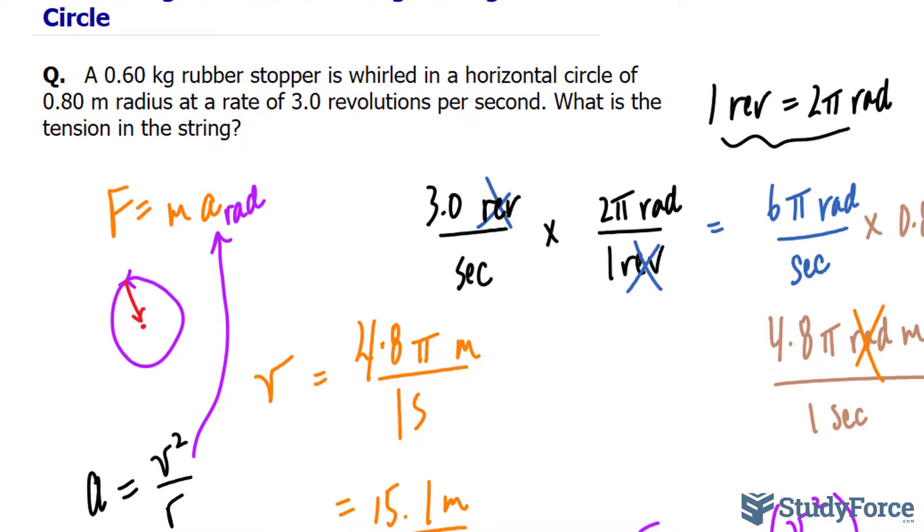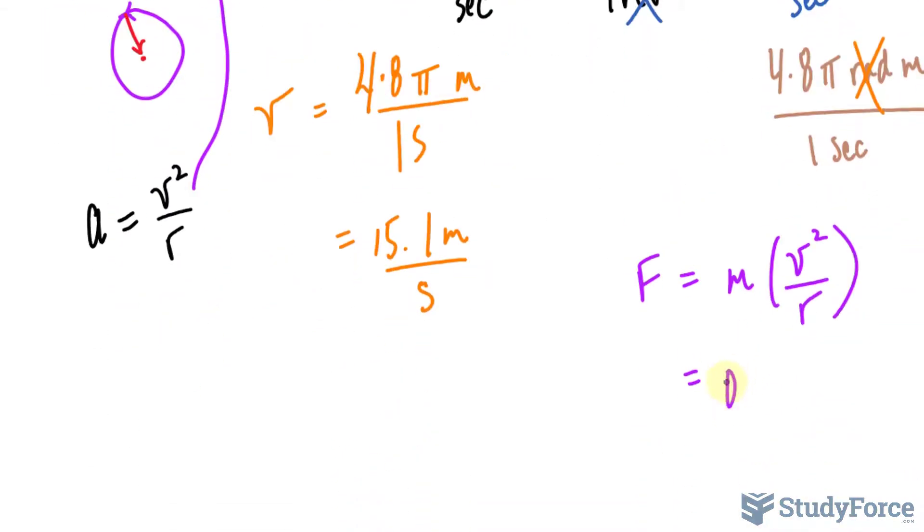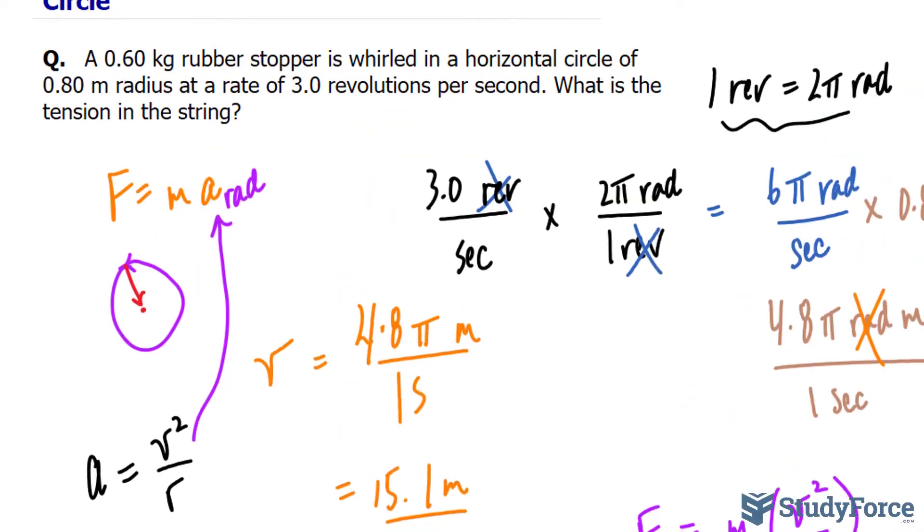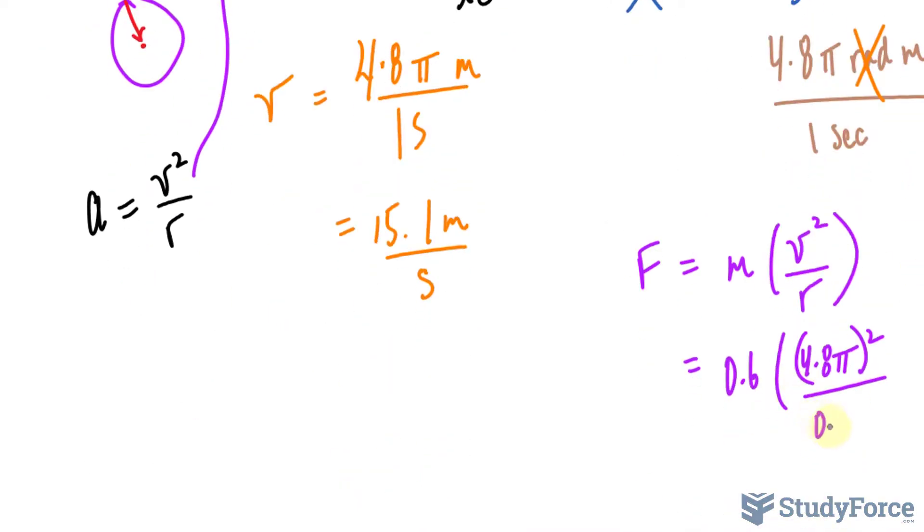Let's fill this in. The mass is 0.6. The radius we found to be, I'll write down 4.8 pi for simplicity's sake. So 4.8 pi raised to the power of 2 over the radius, and that was 0.80.